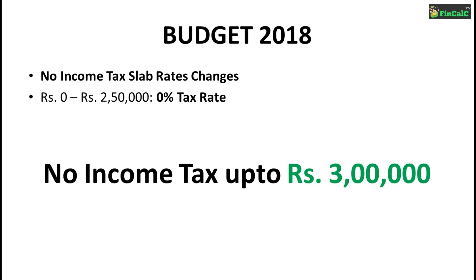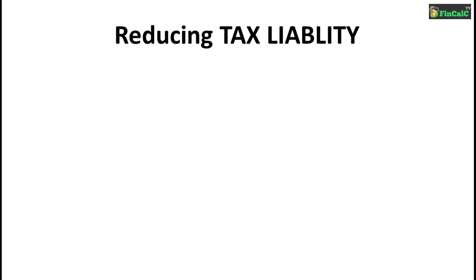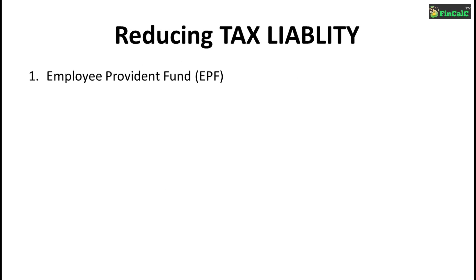So we have the following ways of reducing our tax liability. The very first thing is provident fund. If you are working for any organization, 12% of your basic salary goes to the employee provident fund scheme, which you can claim as tax exemption from your gross taxable income. The second thing is public provident fund, where you can invest a maximum of Rs.150,000 in a particular financial year.